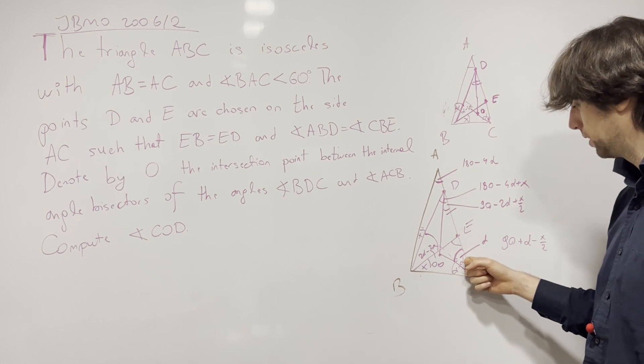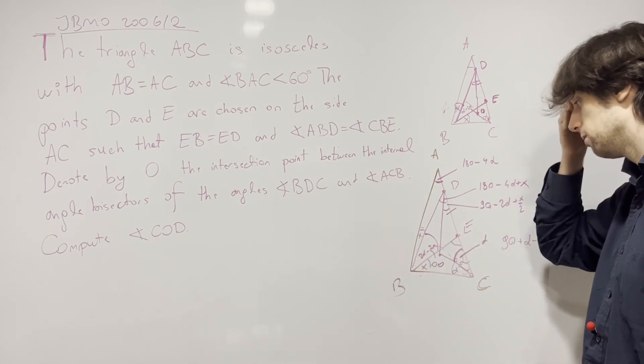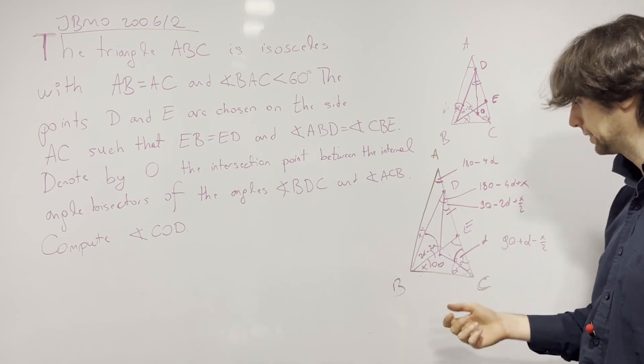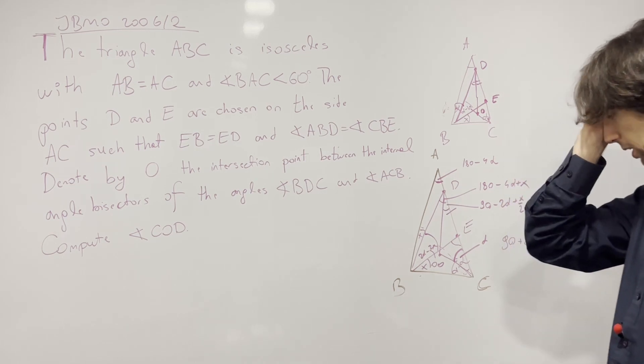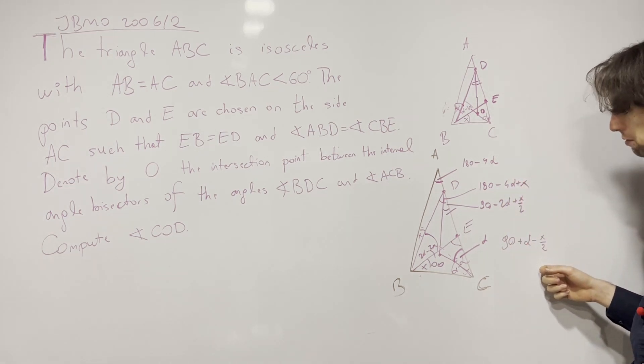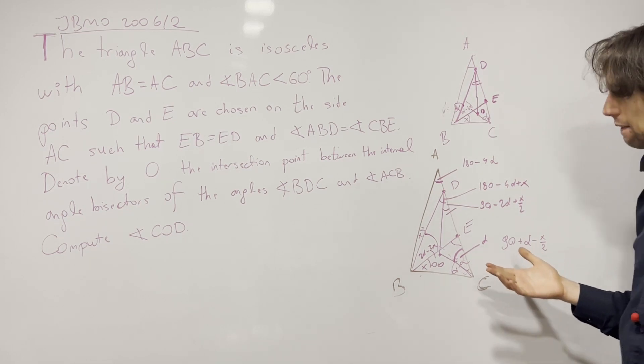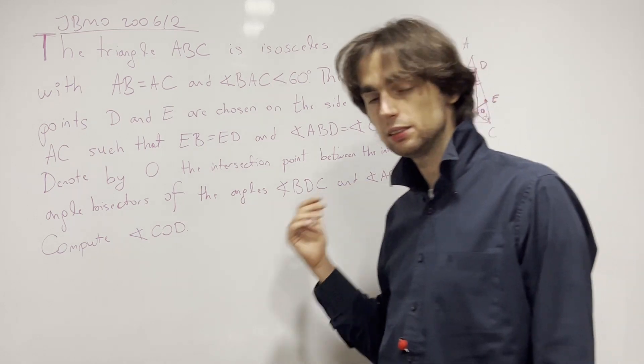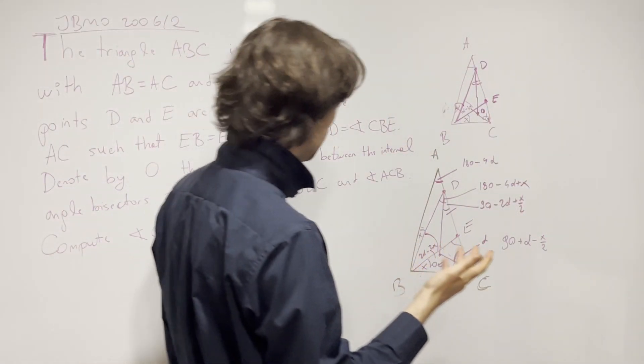Unless we've made a mistake somewhere along the way. Let's double check. We have alpha, alpha, and this 4 alpha minus X. So this gives us 4 alpha here. All seems to be good. So now we have that COD is 90 plus alpha minus X over 2. And that seems to be about it.